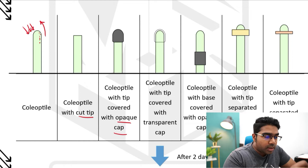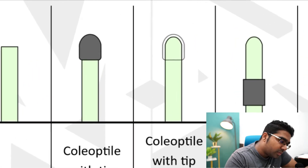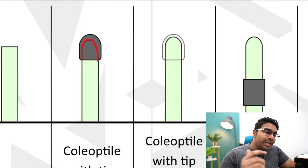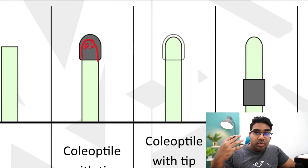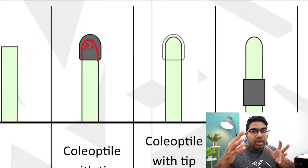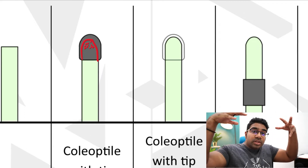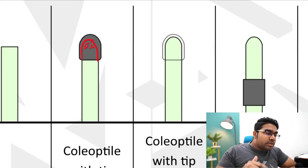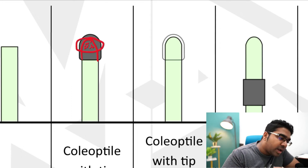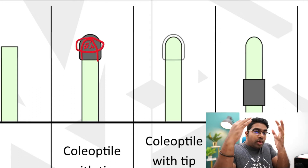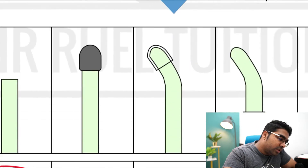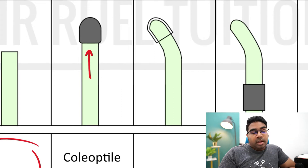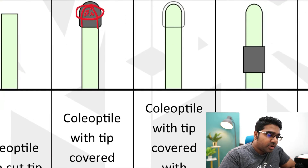When we put an opaque cap on the coleoptile, the cap does not allow light to go in. Therefore, the auxin is still evenly distributed because it is not exposed to light and does not move anywhere. The auxin distribution is even all over the coleoptile tip, so cell elongation happens at a high rate at all points, and therefore it will grow straight up.